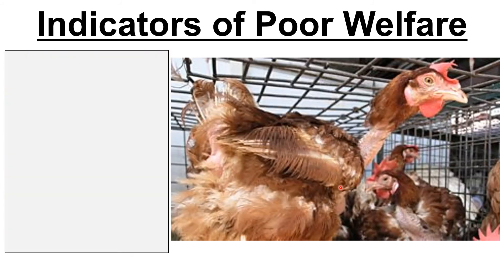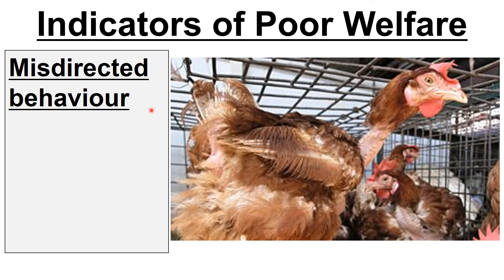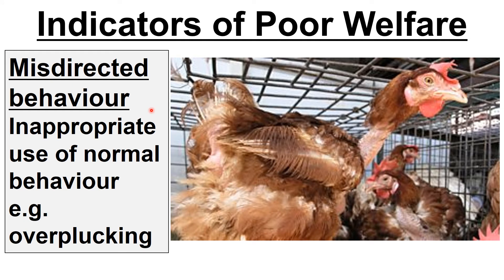The second indicator is misdirected behaviour — this is when you have normal behaviour but it's used inappropriately. Birds will naturally pluck their feathers, but what you see here is that normal behaviour taken to excess. Overplucking would be an example of misdirected behaviour.